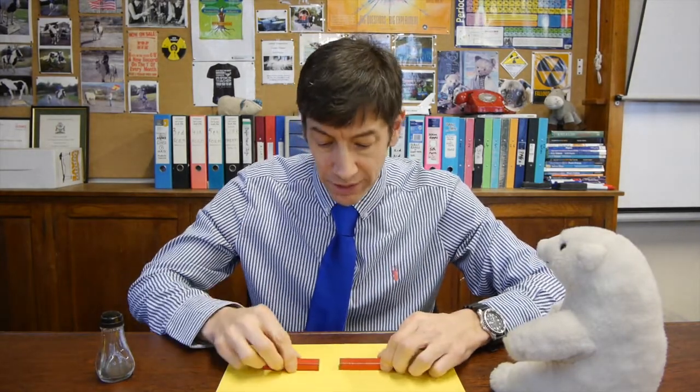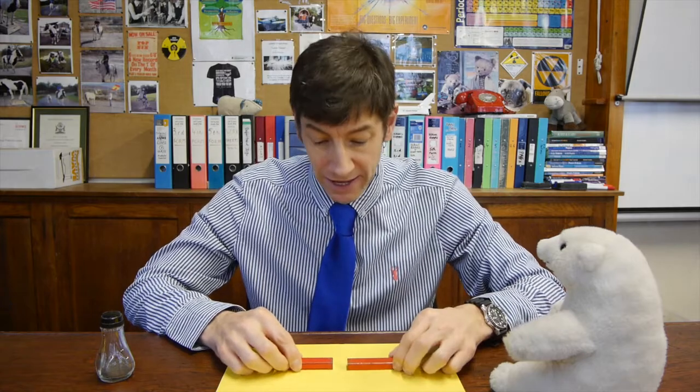But there's one other experiment that some teachers forget to get their pupils to do. So let's do this one. Don't forget we did attraction, but what happens if the magnets are repelling? So let's put two magnets underneath the piece of paper that are repelling. And let's sprinkle the iron filings on and see what shape of field we get this time.